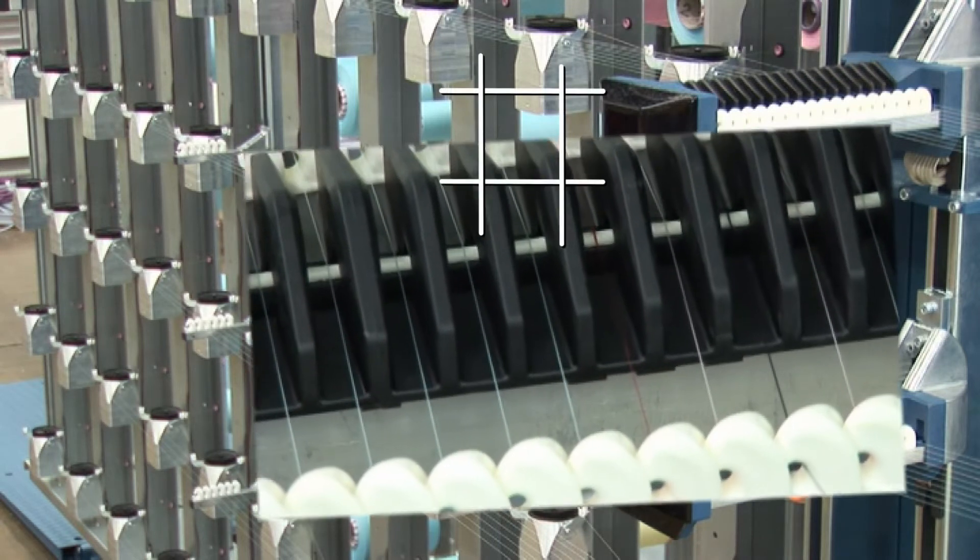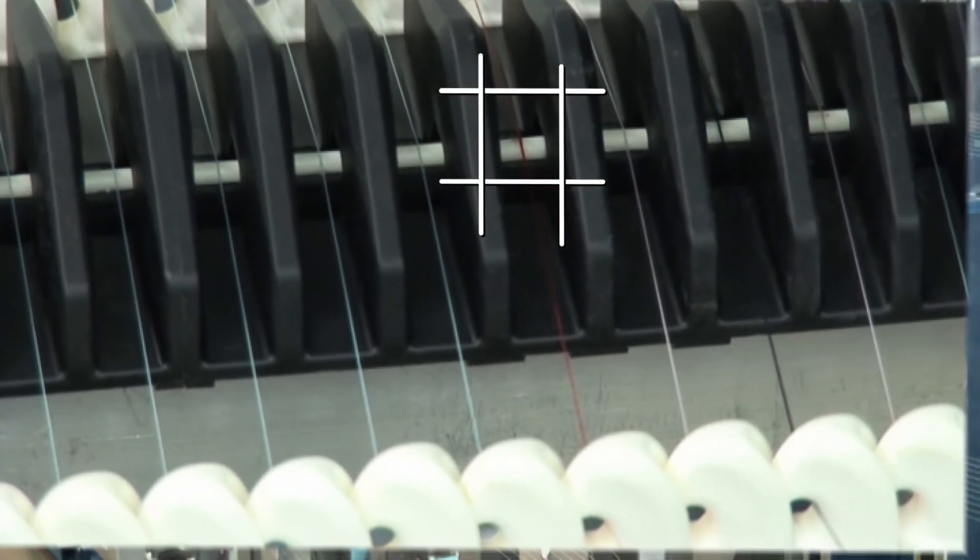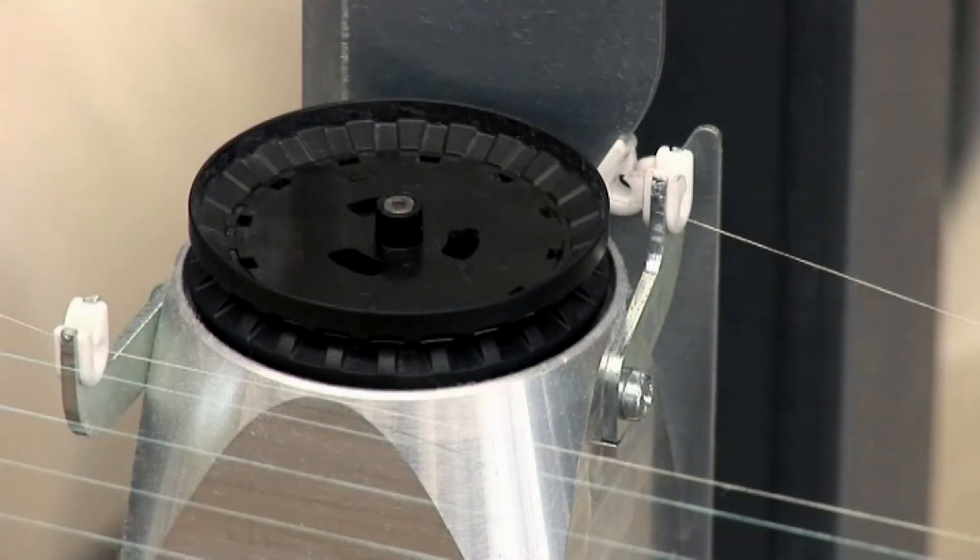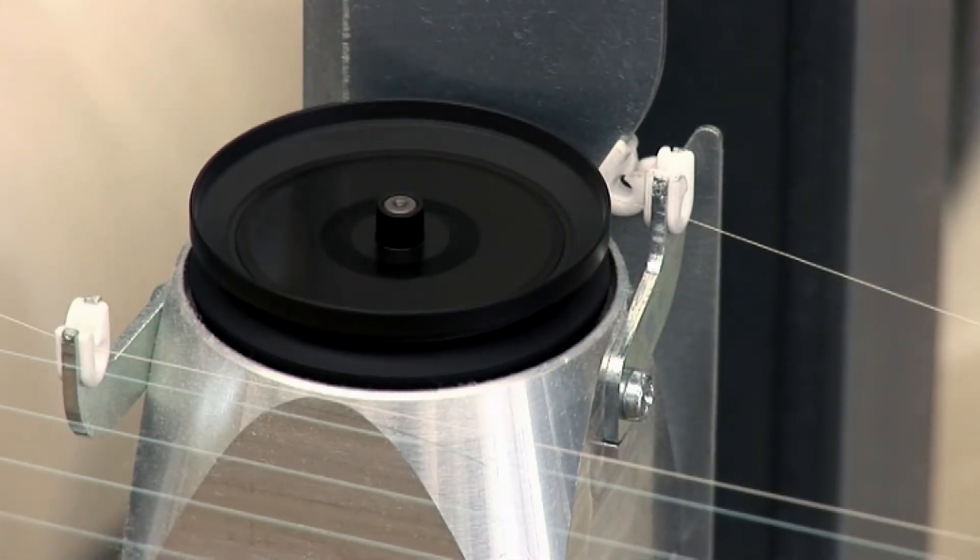The sensor constantly measures the yarn tension of each individual thread. Each tensioner is precisely adjusted to the set value with the measuring signal.